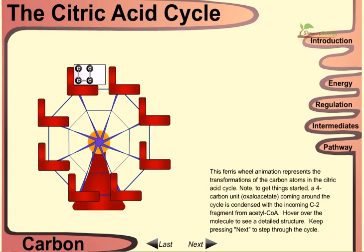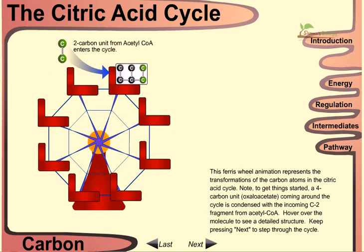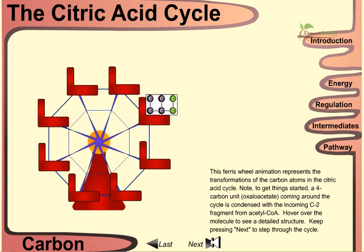The animation presents the transformations of the carbon atoms in the citric acid cycle. A four-carbon unit, oxaloacetate, coming around the cycle is condensed with the incoming two-carbon fragment from acetyl-CoA.